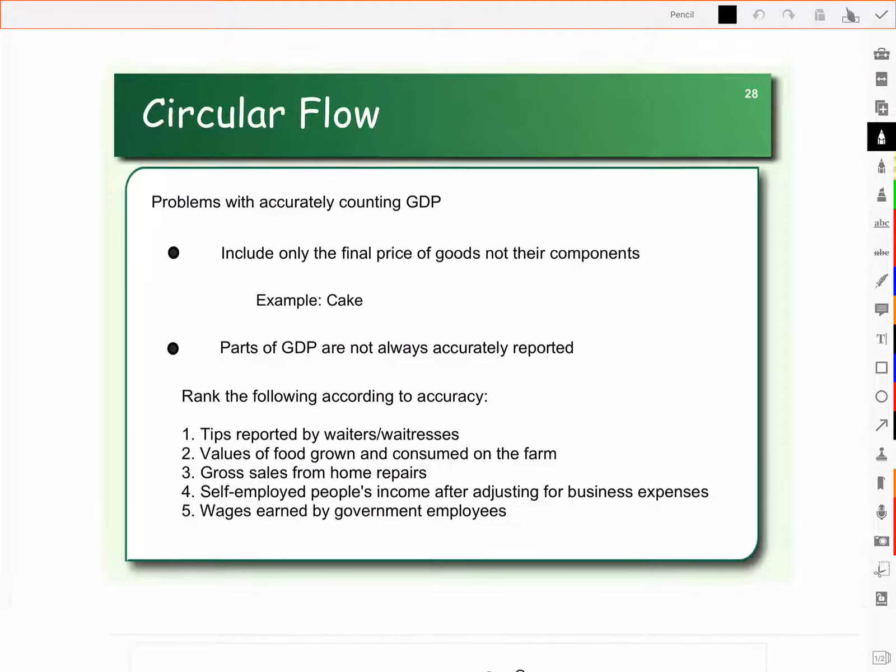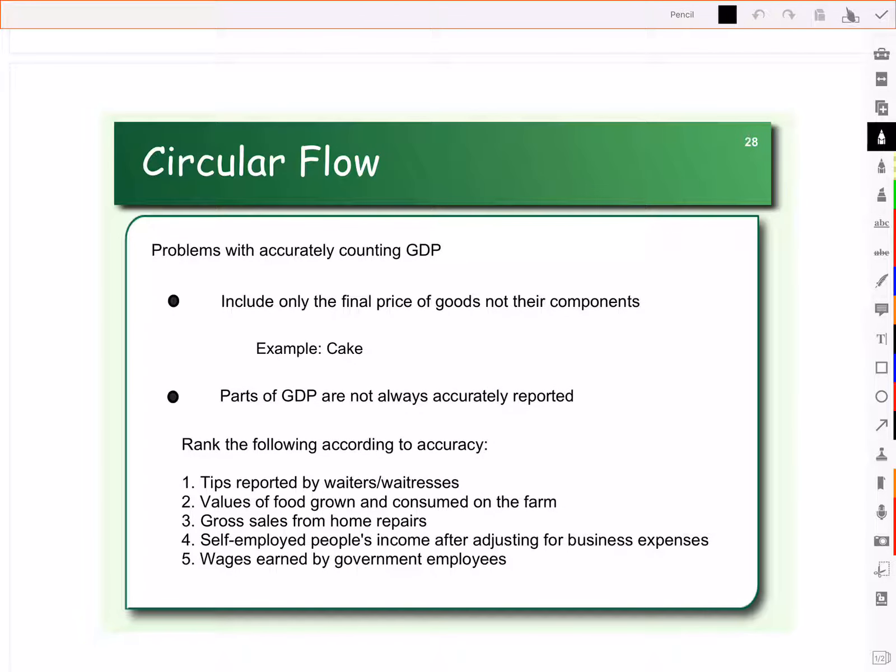So we could look, for example, at some scenarios like tips. Or maybe you grow your own food on the farm. We could look at doing home repair, being self-employed. All of those have issues in terms of accuracy.